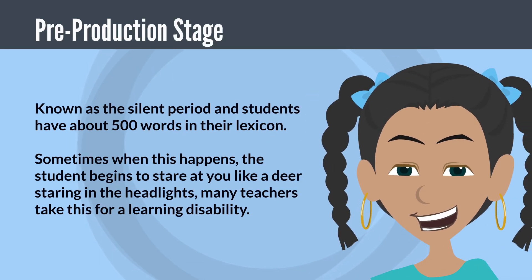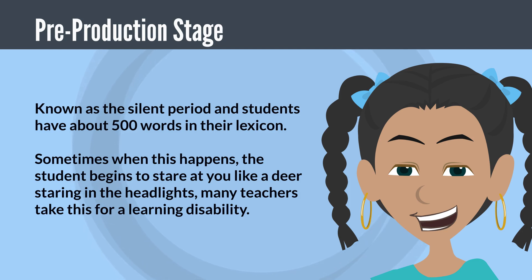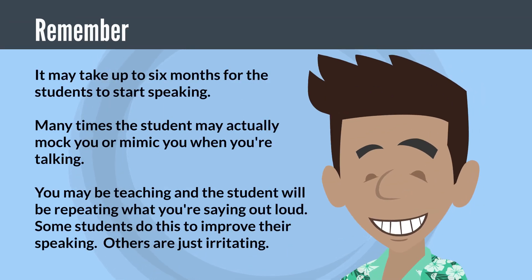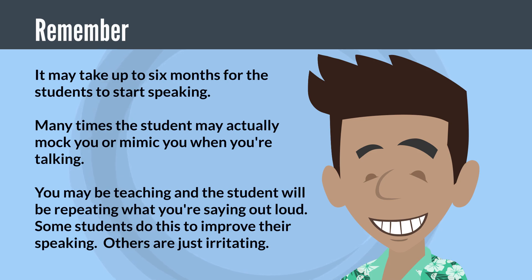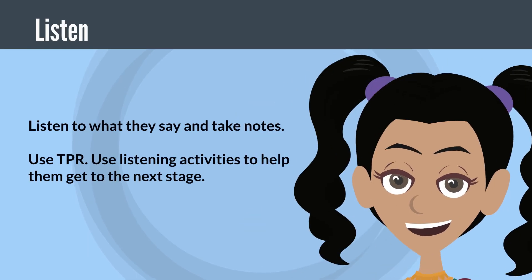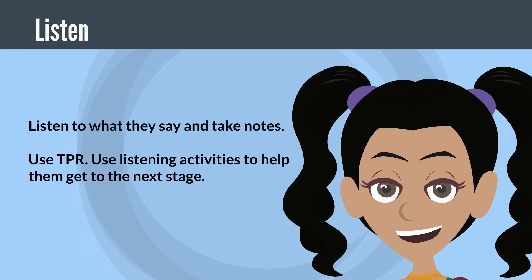The pre-production stage is known as the silent period and students have about 500 words in their lexicon. Sometimes when this happens, the student begins to stare at you like a deer in the headlights. Many teachers take this for a learning disability. Remember that it may take up to six months for students to start speaking. Many times the student may actually mimic you when you're talking — repeating what you say out loud. Some students do this to improve their speaking. Listen to what they say and take notes. Use TPR and listening activities to help them get to the next stage.